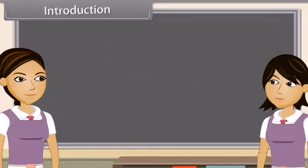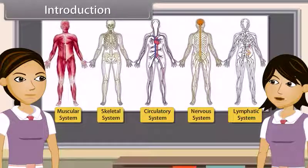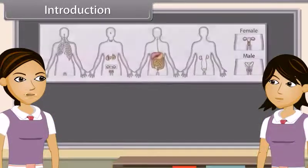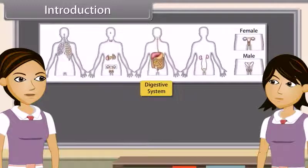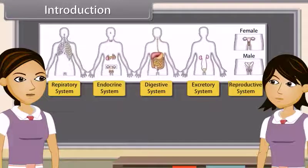Introduction. As we already know, the body of higher animals like man is formed of a number of organ systems. Some examples are digestive system, respiratory system, circulatory system, excretory system, etc.